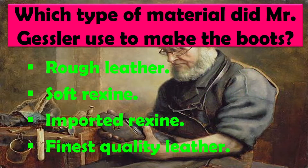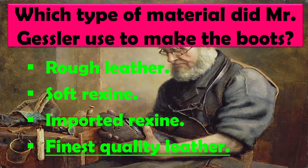Which type of material did Mr. Gessler use to make the boots? Joote banane ke liye kis tarah ka padarth use karte the? Options: Rough leather — kathor chamde ka, soft leather — naram chamde ka, imported leather — aayat ki hui chamde ka, finest quality leather — sabse achi gunvatta wale chamde ka. The right answer is finest quality leather.